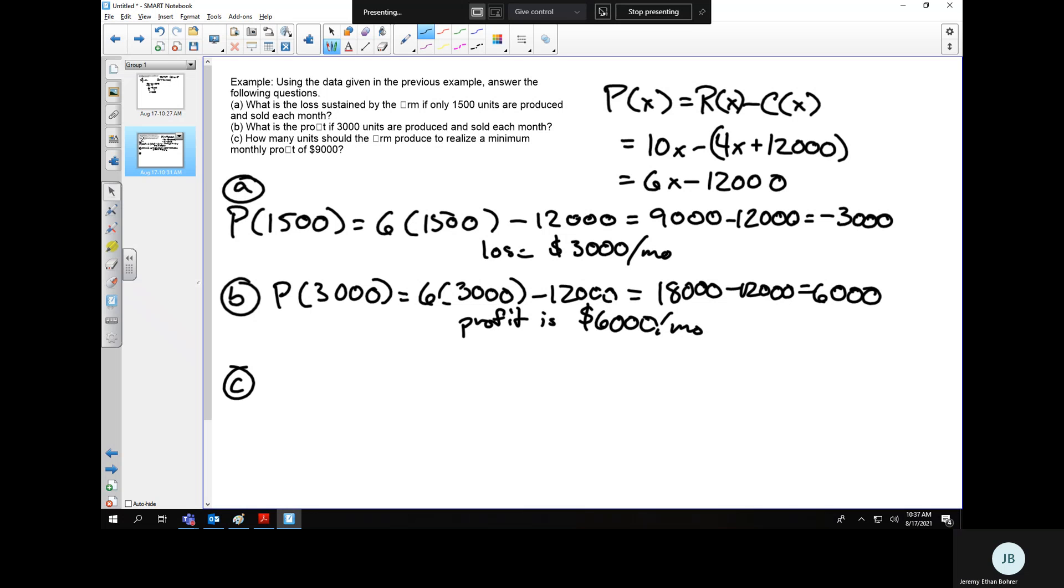Finally, how many units should the firm produce to realize a minimum monthly profit of $9,000? We could do this based on a pattern that we've already seen, but we're not going to. We are going to do this by saying we know what the profit is and we need to find X. We know the profit is $9,000, and that's equal to C of X, which we know to be 6X minus 12,000.